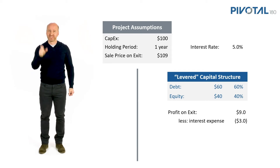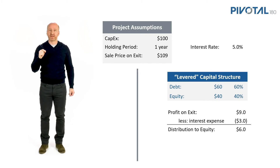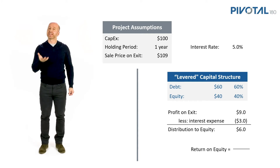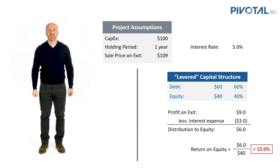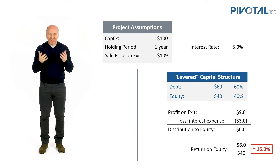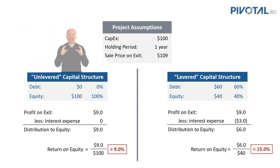We have nine dollars in profit on exit less three dollars of interest expense, giving us six dollars available to be distributed to equity. So what's our return to equity? It's the six dollars that can be distributed divided by the amount of equity that was invested — forty. Six divided by forty is a fifteen percent return on equity.